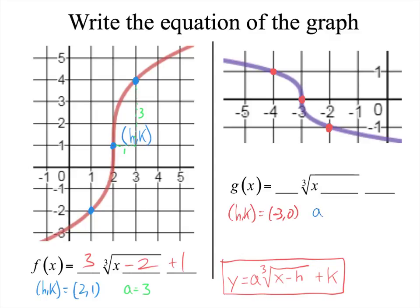My A value is, well, when I go over 1, I went down 1. So I went down 1 as I went over 1. So I'm dropping 1. So my A value is a negative 1.